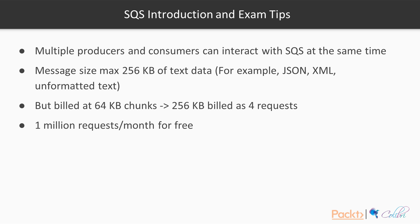Multiple producers and consumers can interact with SQS at the same time — multiple producers can send messages to your SQS queue while multiple consumers pick up, read, and delete those messages simultaneously. The maximum message size is 256 kilobytes of text data, in JSON, XML, or formatted text. You are billed in 64-kilobyte chunks for legacy reasons, so a 256 KB message counts as four requests. You also get one million requests per month for free, even after the free tier expires.